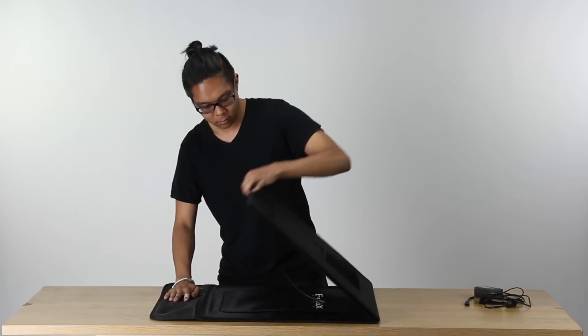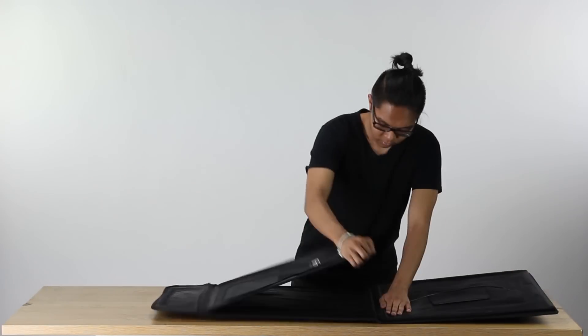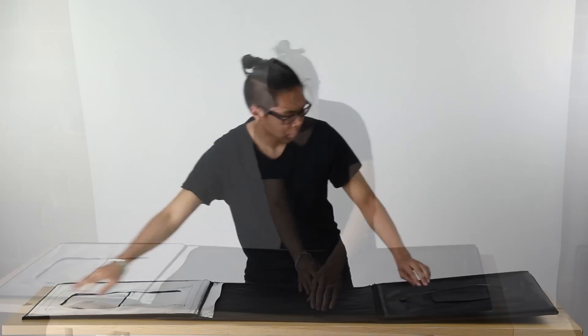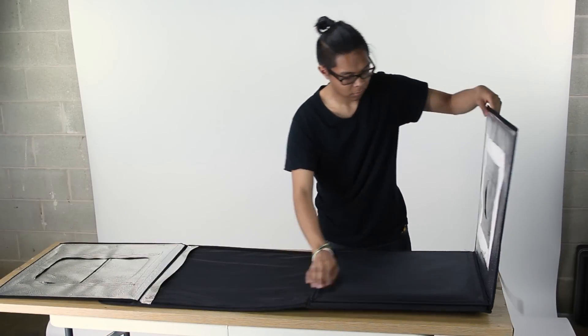Open the light tent and fold out its left and right sides. Unfold the panels from the left side of the light tent, fastening them together to form a cube.